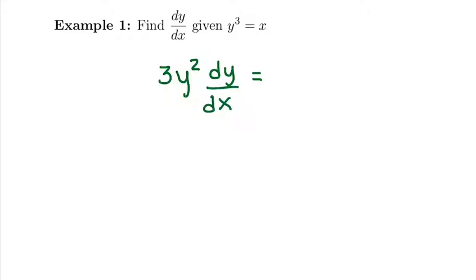On the right side, the derivative of x is 1. Now we want to get dy/dx on one side by itself. We're going to solve for the derivative.